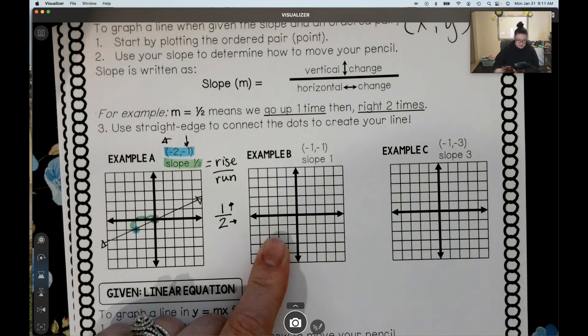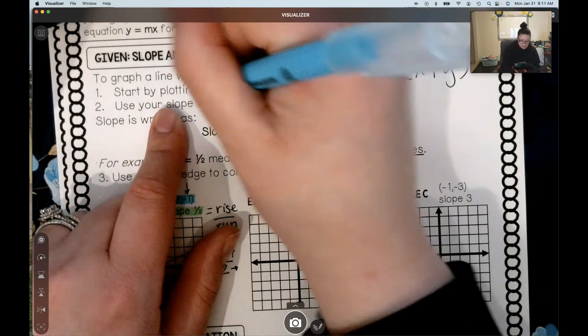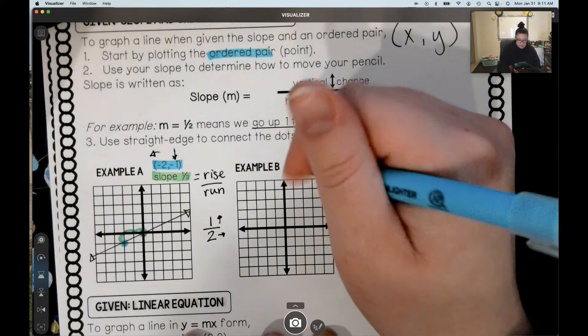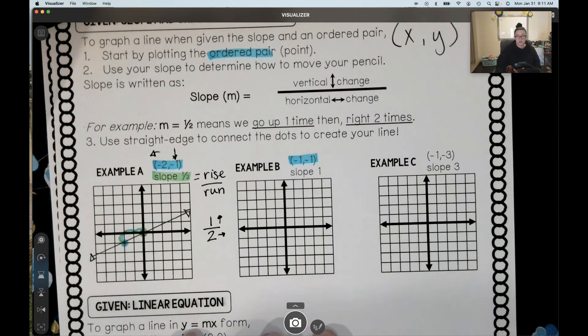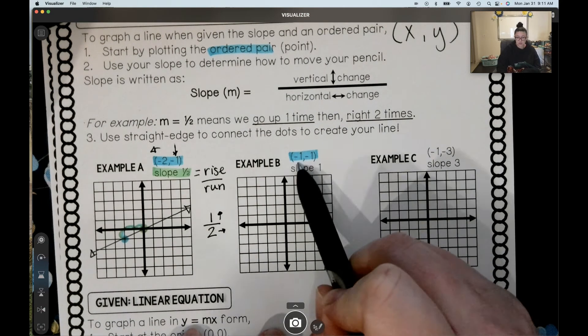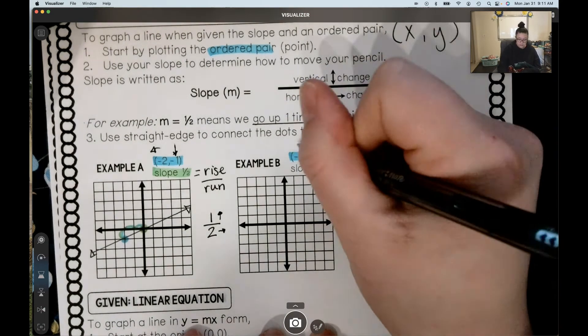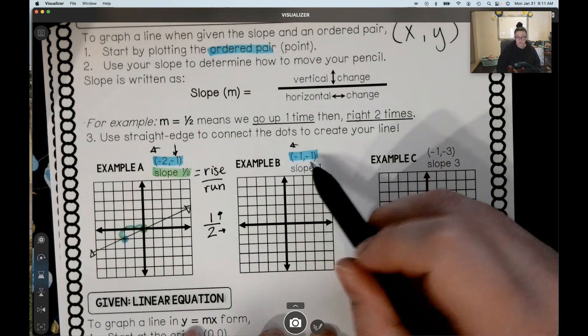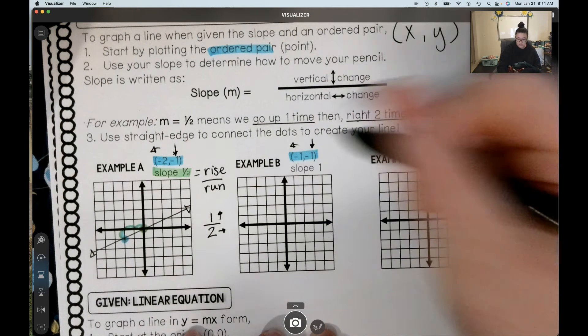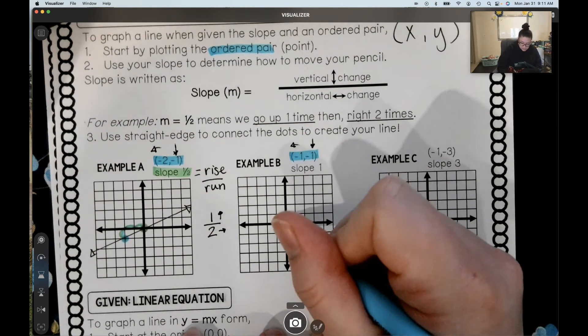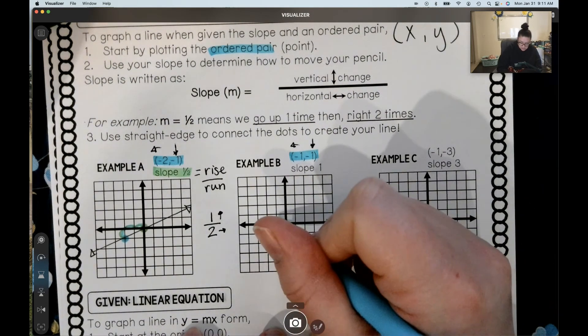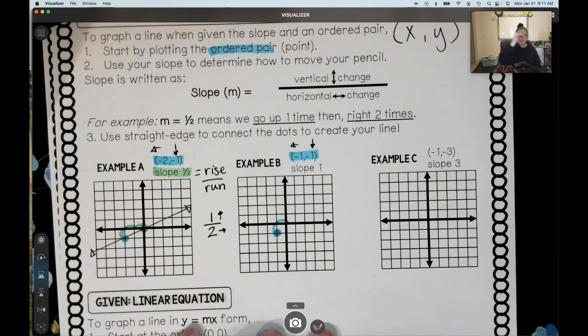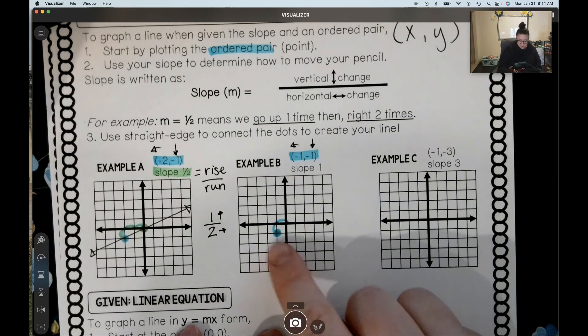All right, again, same thing. First off, I want to put my ordered pair there, my point. Here my ordered pair is negative 1, 1. Negative 1, 1. So that means I need to go to the left or to the right first. I need to go to the left because it's a negative 1. And then I'm going to move how? Then I'm going to go down 1 because it's negative. We're just kind of working backwards here. To the left 1 space, and then down 1 space. Like we're driving a car. We can't drive through a block. We have to go up and over and down. So there's my first spot.